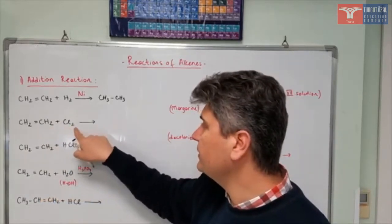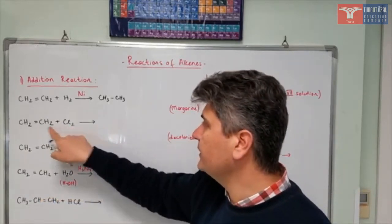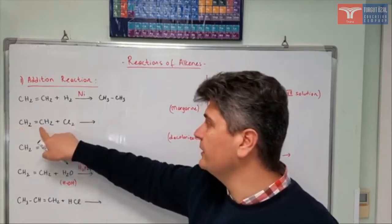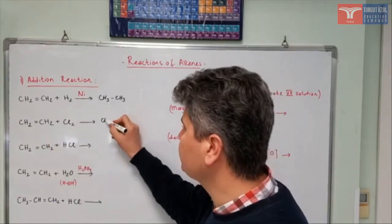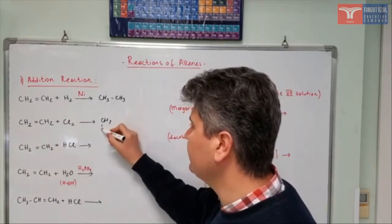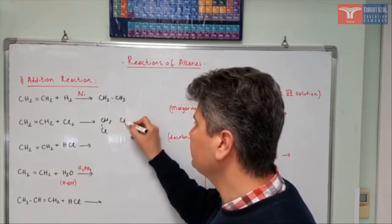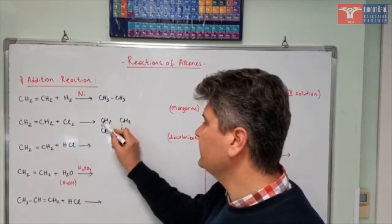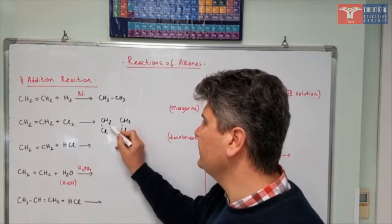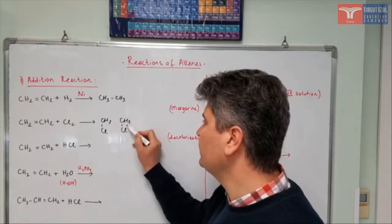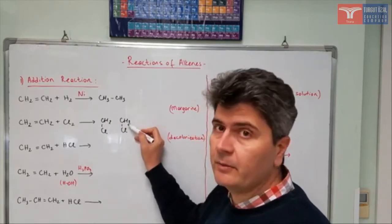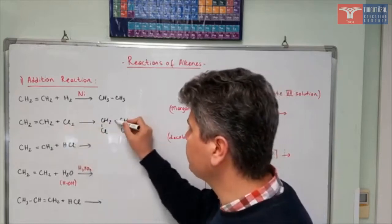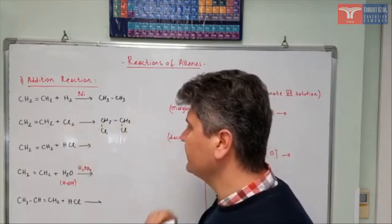A similar reaction occurs in the second case. We have chlorine, Cl₂. One of the chlorines adds to the first carbon, the other chlorine adds to the second one, so it becomes CH₂Cl and another CH₂Cl. Now both carbon atoms are making three bonds each — they need one more bond, so the double bond changes into a single bond.